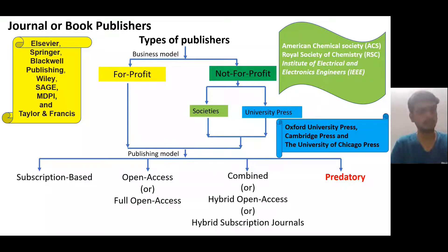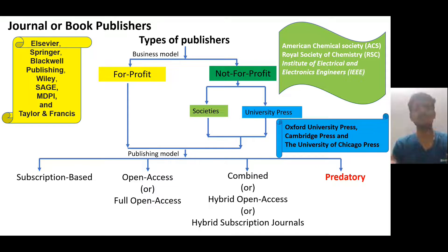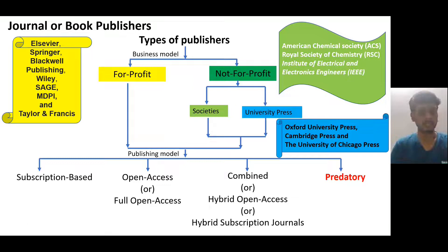Good morning everyone. Today my topic is to highlight where to disseminate our knowledge — venues for dissemination of your knowledge, publications, and papers you are writing. We'll look at book publishers and general publishers. Let us first classify the publishers by their business models — what type of books, journal articles, and monographs they will publish.